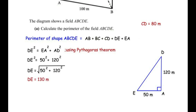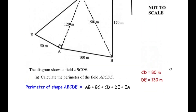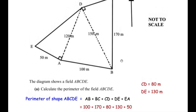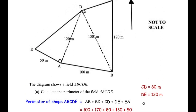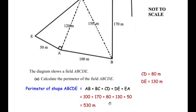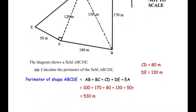Now we have found the lengths of all sides of field ABCDE. Substituting into the perimeter formula: AB = 100, BC = 170, CD = 80, DE = 130, EA = 50. Adding all these values gives the perimeter as 530 meters.